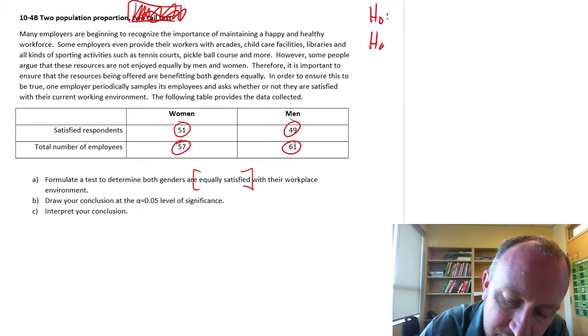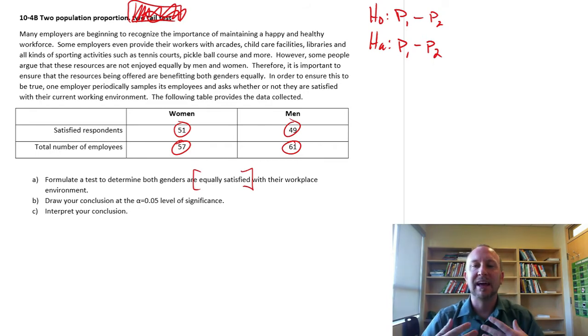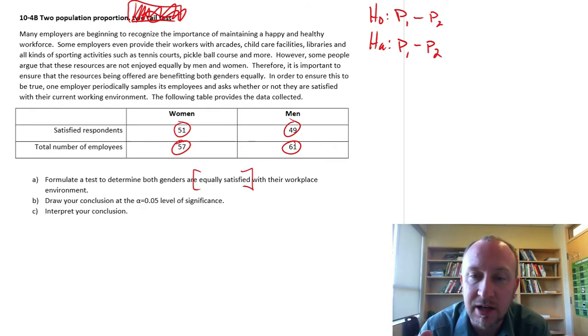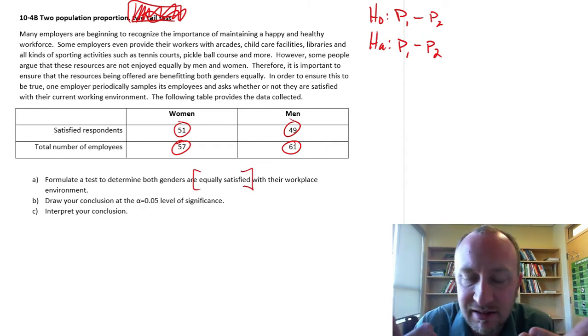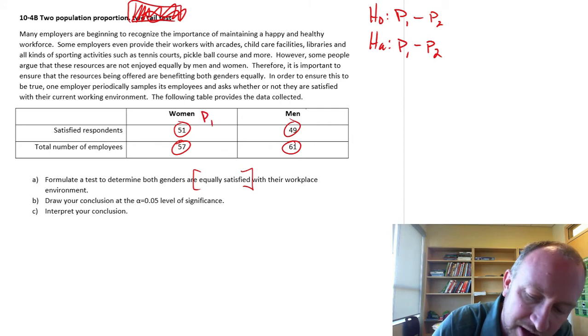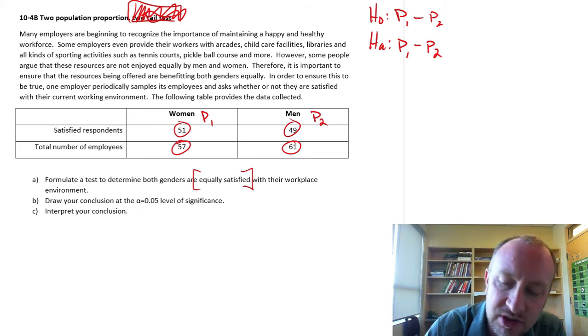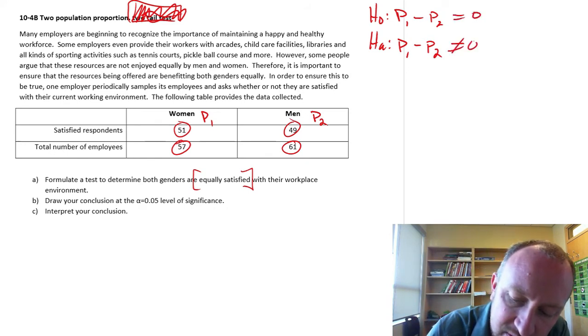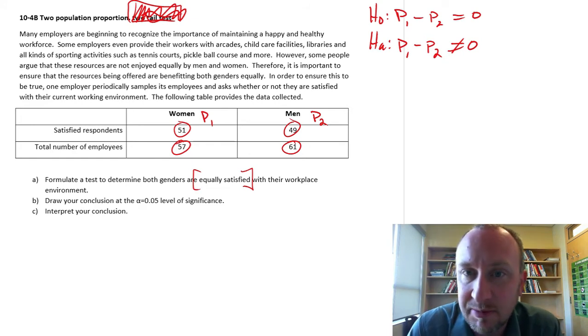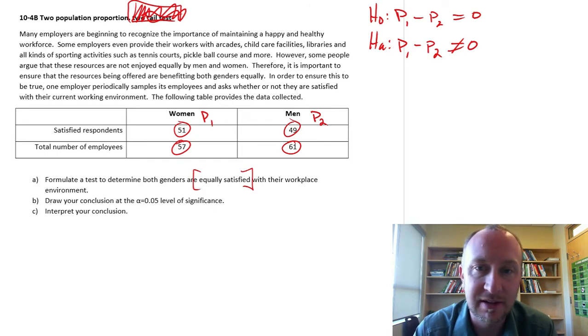So my null and my alternative - here again we're testing proportions, p1 minus p2. We don't have to put in as much thought as to how we define our populations when we're doing a two-tail test, but it's still something that is necessary. So here I'll just call this my population 1 or proportion 1, and my proportion or population 2. This is going to be equal to 0, this is not equal to 0. If the evidence supports the null hypothesis, then that supports the claim that yes, both genders are enjoying these resources equally. If the evidence supports the alternative hypothesis, then there may be an issue we'll have to resolve.